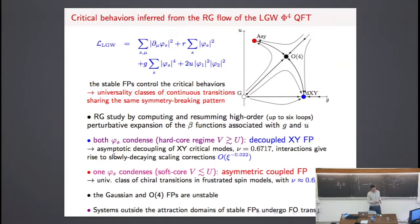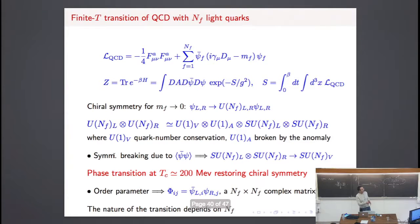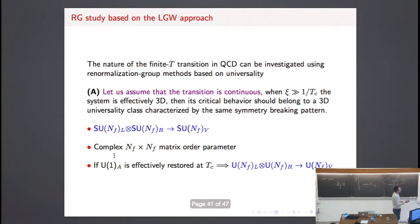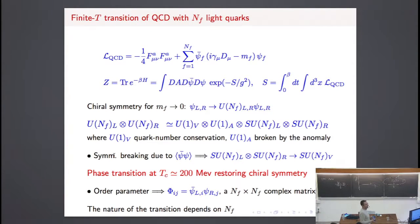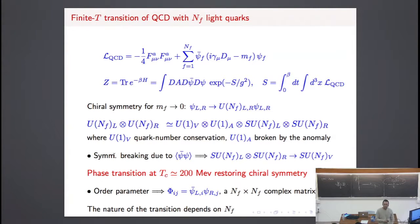I wanted to finish with another example taken from quantum chromodynamics — the finite-temperature transition of hadrons. This is the transition I mentioned at the beginning when discussing the Big Bang evolution: at around 200 MeV there is a transition from a phase with quarks to a phase with hadrons — the quark-hadron transition. This transition can also be investigated using the same framework, from which you get predictions to compare with what is observed in numerical lattice QCD simulations.